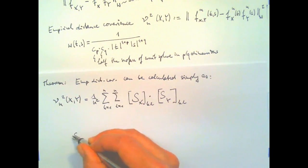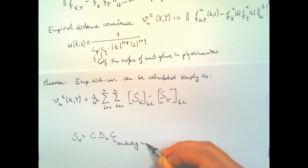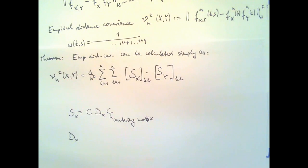And again, S is not the scatter matrix, but it is now C, D, X, C, where C is the centering matrix that we've seen earlier today. And the distance matrix which is being centered here, element KL of this distance matrix is simply the Euclidean distance of two random samples. Perhaps I should have started the other way around.